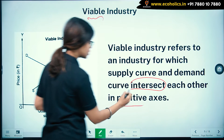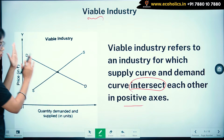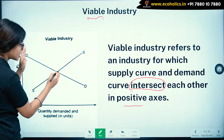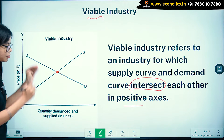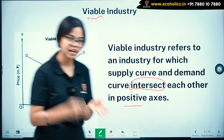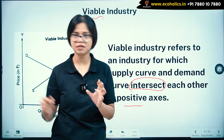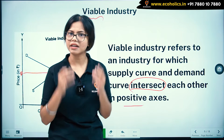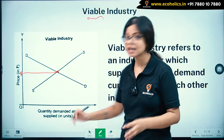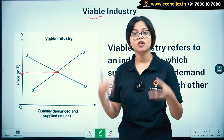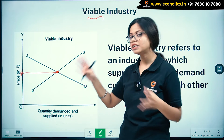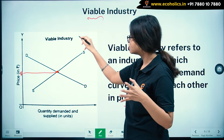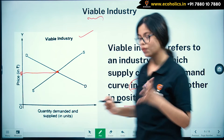Looking at the graph — price and quantity axes, the demand curve and supply curve are intersecting. That means producers are ready to produce at a price, say P, and consumers are ready to buy the commodity at that price. When demand and supply curves intersect, that is a viable industry.